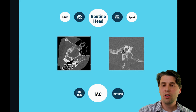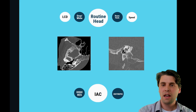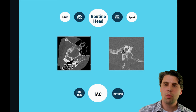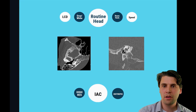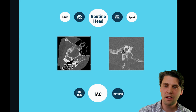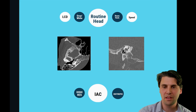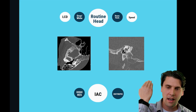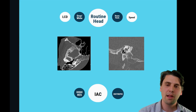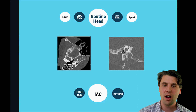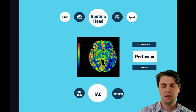Inner auditory canal or inner ear imaging is another task wherein the most important metric is actually the spatial resolution. The high contrast spatial resolution also needs to be isotropic because we want to cut in any plane and have isotropic resolution there.